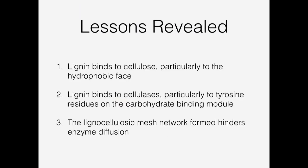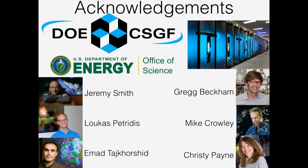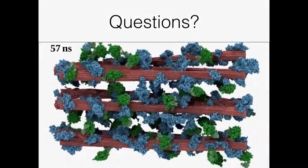To summarize: lignin binds to cellulose particularly at its hydrophobic face, and lignin binds to cellulases particularly at tyrosine residues on the carbohydrate binding module. Both inhibition mechanisms have some validity, and it's still not clear which dominates. The mesh network formed really inhibits enzyme diffusion. I'd like to acknowledge the CSGF for funding, my advisor Ahmad Tashkorshid, my Oak Ridge advisors Jeremy Smith and Lucas Petridis, and my NREL advisors Greg Beckham, Mike Crowley, and Christina Payne. Thank you.